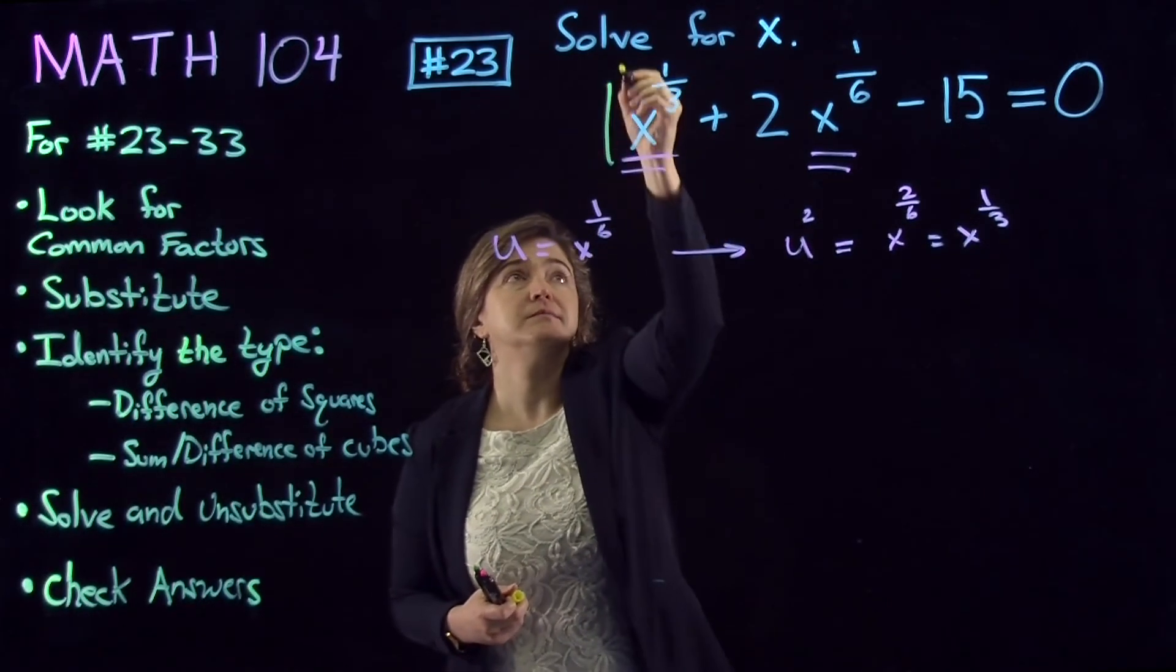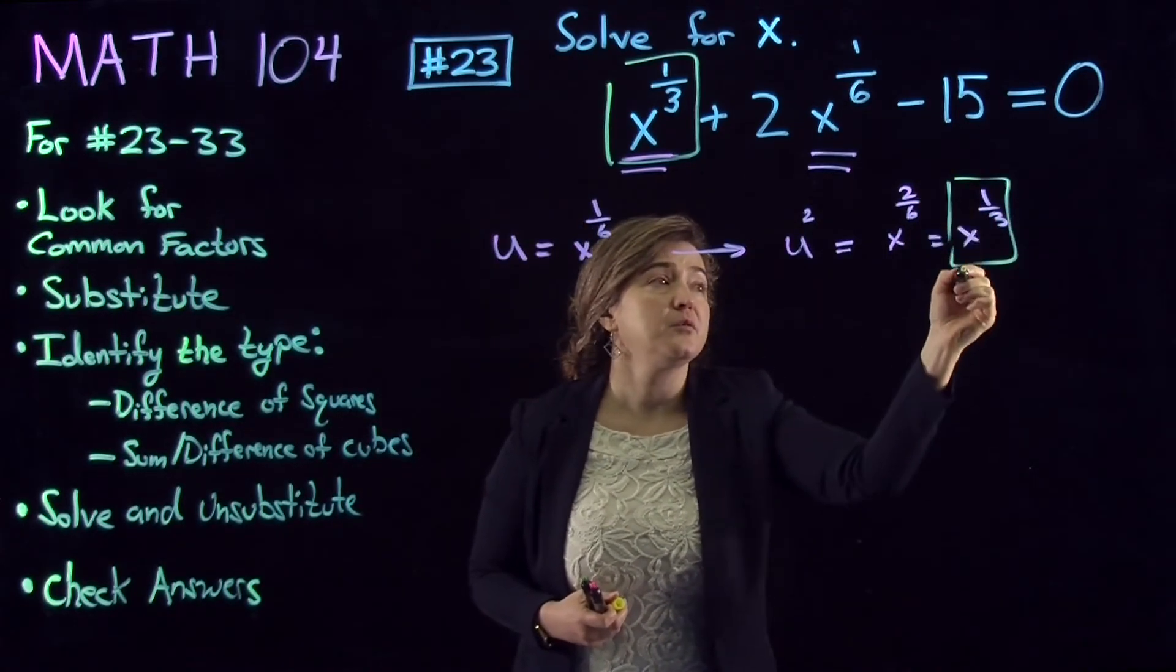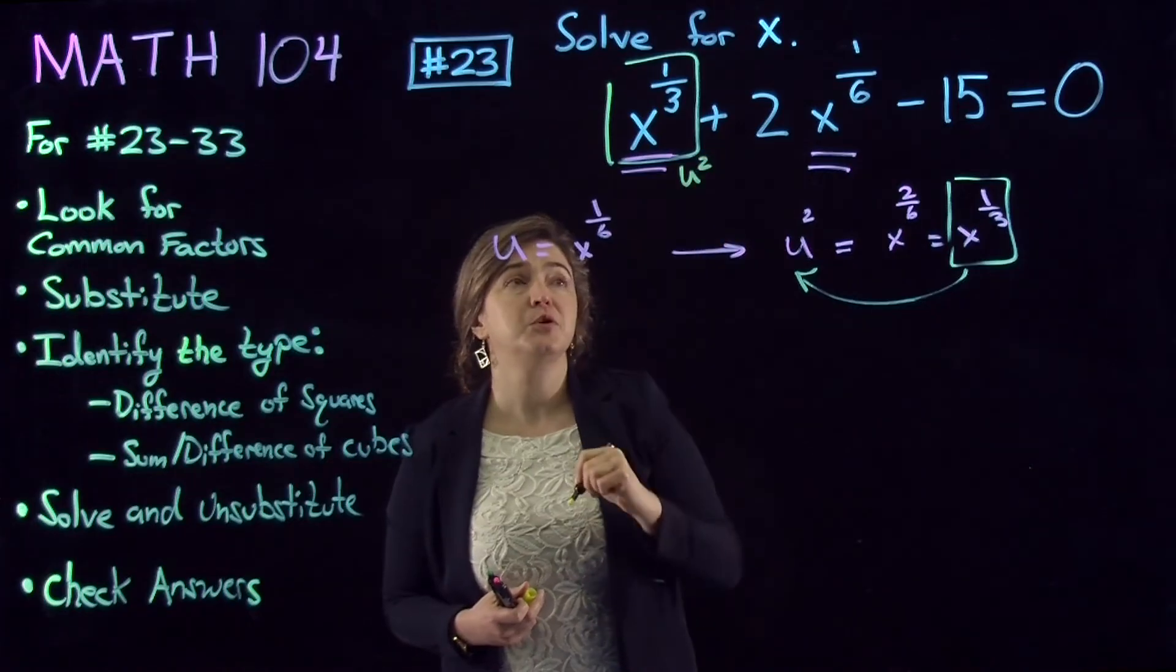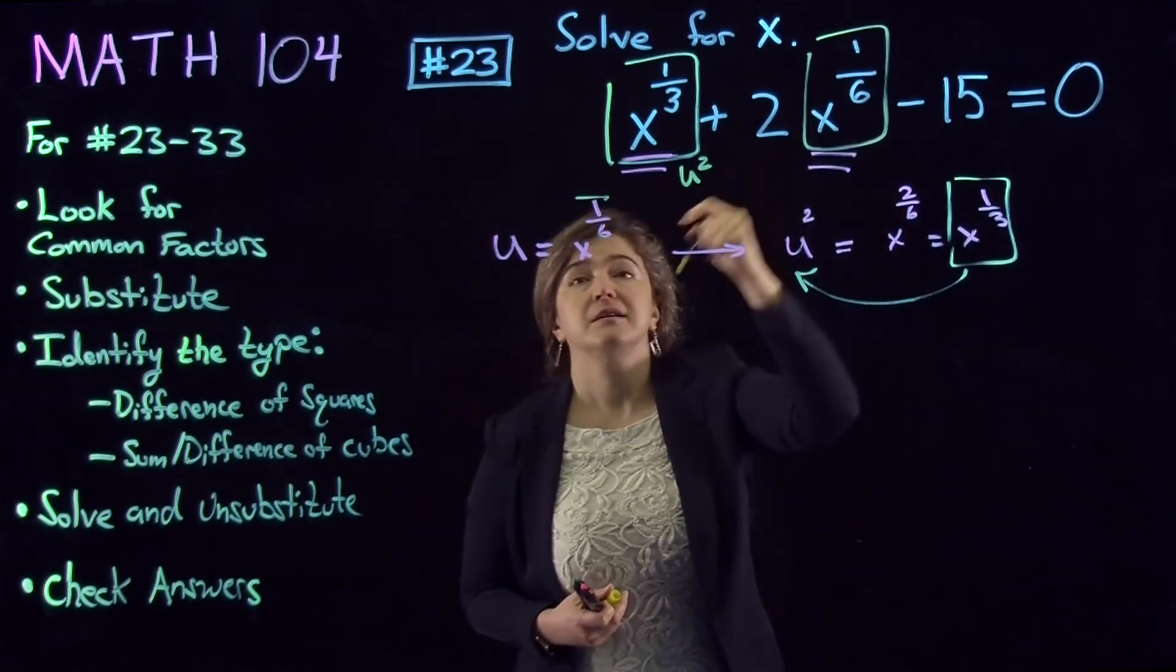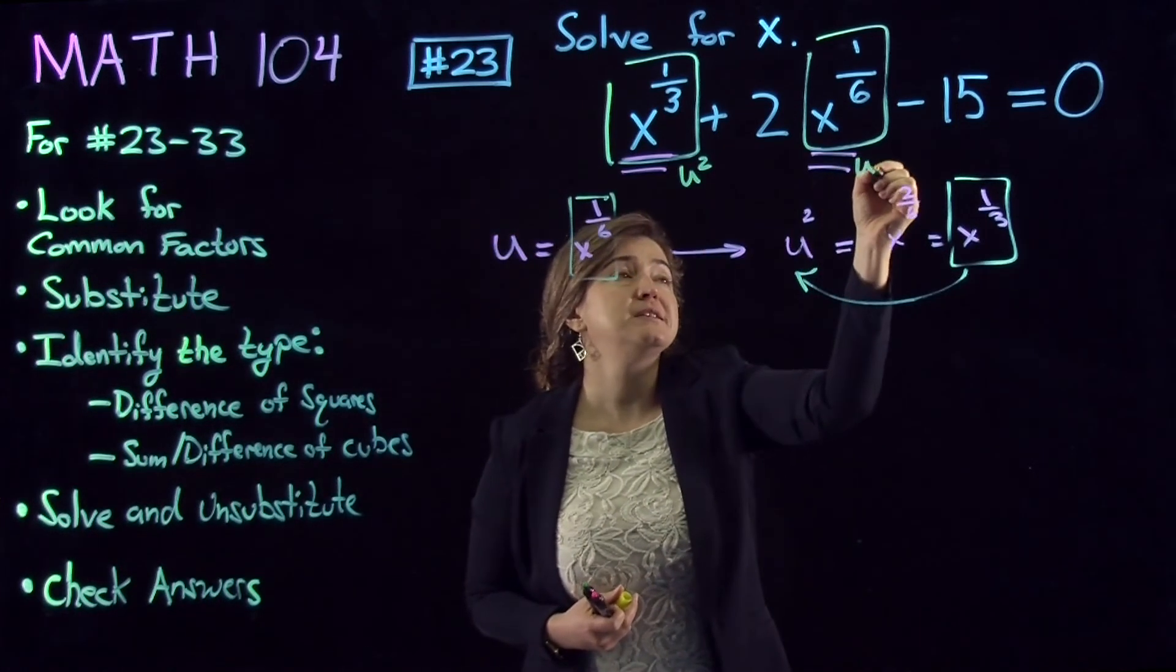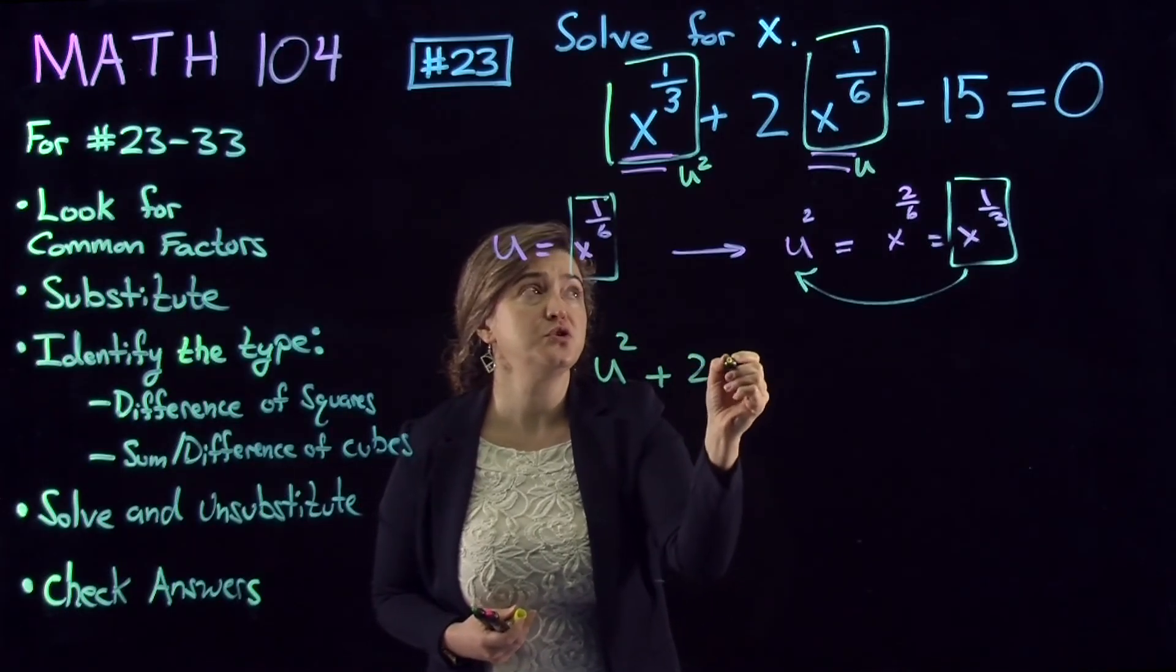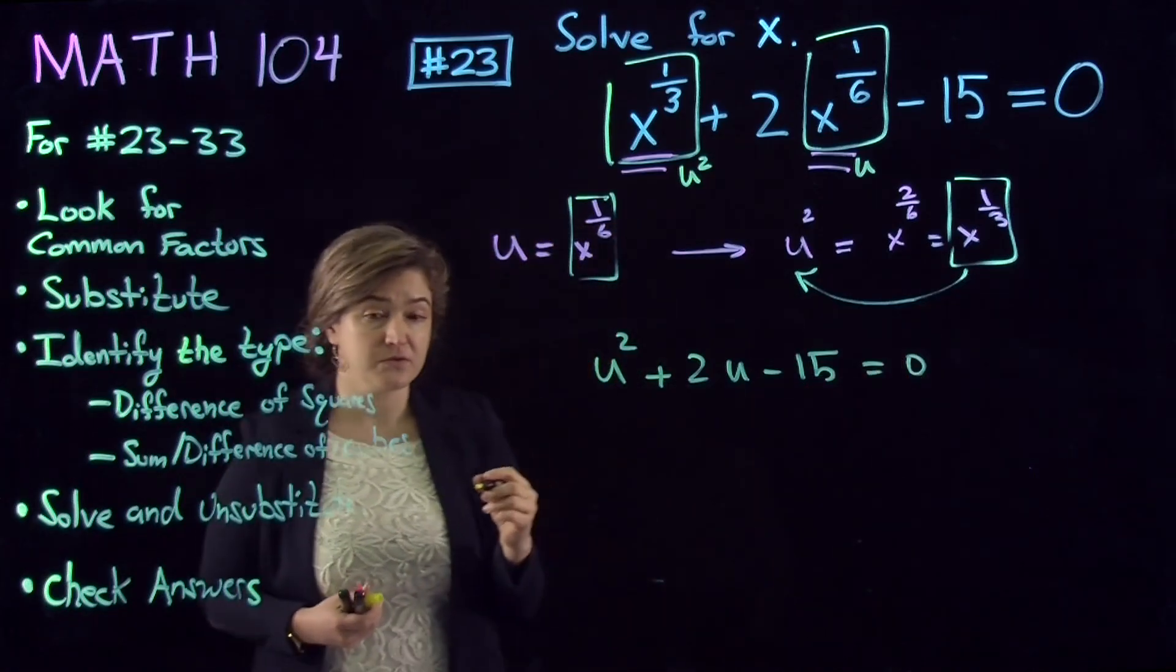So, here, x to the power one-third, we figured out is equal to u to the power two, so I'm replacing that one by u to the power two. And x to the power one-sixth was the original u, and so I'm replacing that by u. What we get is u squared plus 2u minus 15 equal to zero.